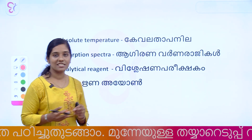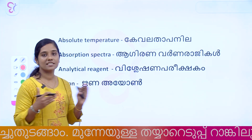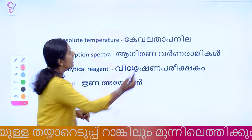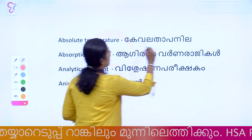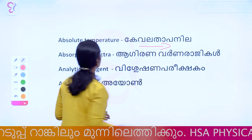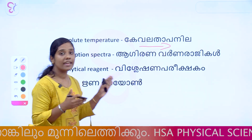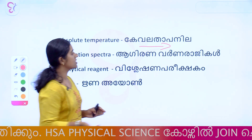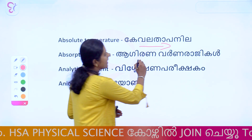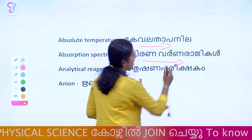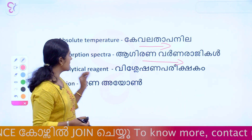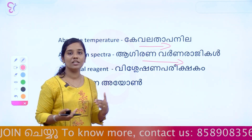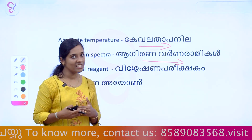This is how Absolute Temperature is defined — it is extremely important. In chemistry, Absolute Temperature is measured in Kelvin (K). It is not in degrees Celsius or Fahrenheit, but in Kelvin (K). Next is Absorption Spectrum.